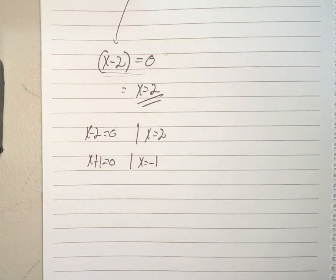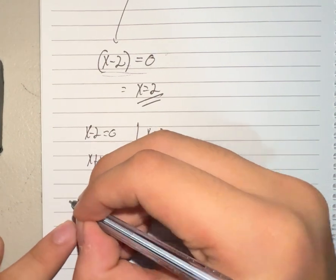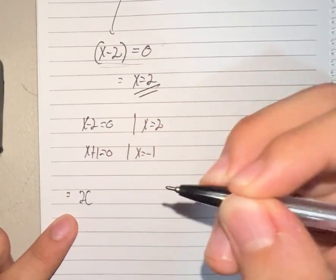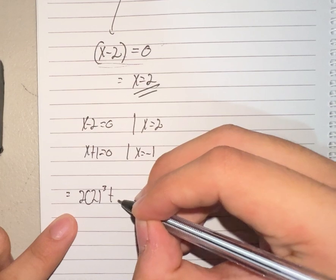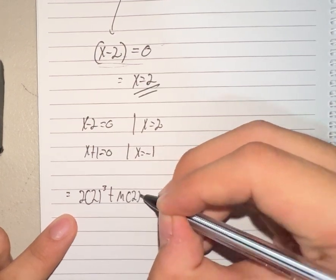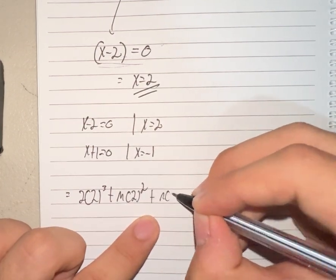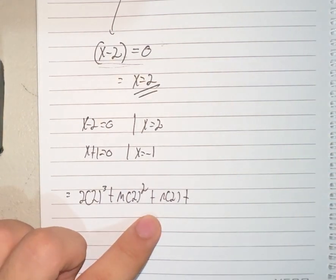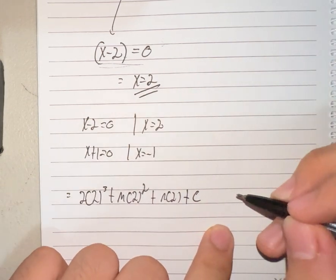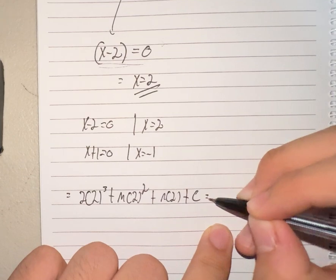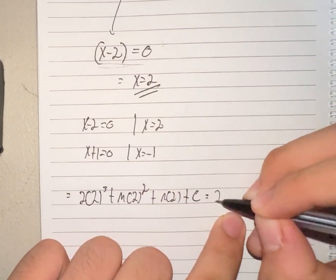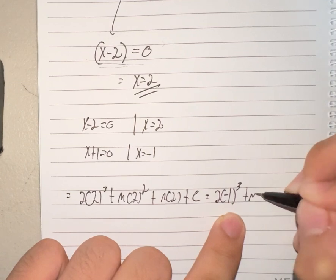So if they both have the same remainder, they both have the same function value, they both equate to the same number. And if they both equate to the same number, we could equate the two equations to each other.